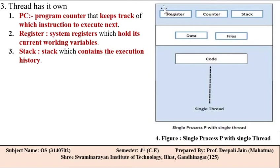A thread has its own Program Counter (PC), Register, and Stack. The Program Counter keeps track of which instruction to execute next. The Register holds the current working variables of the system — these are the hardware parts. The Stack contains the execution history of the thread. So a thread has three main components: program counter, register, and stack.